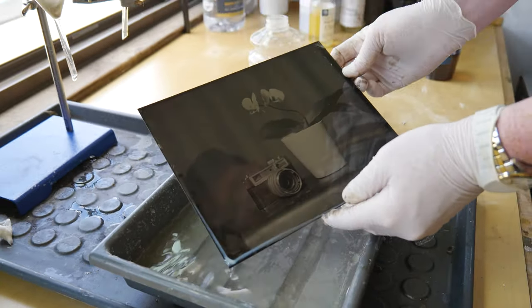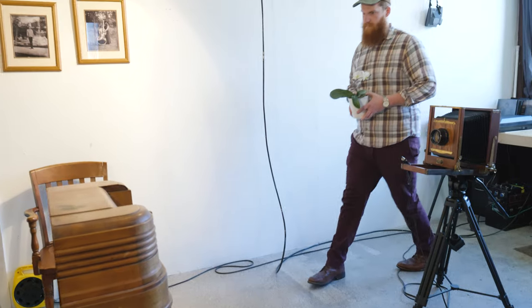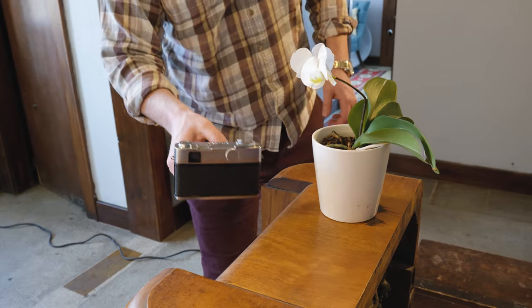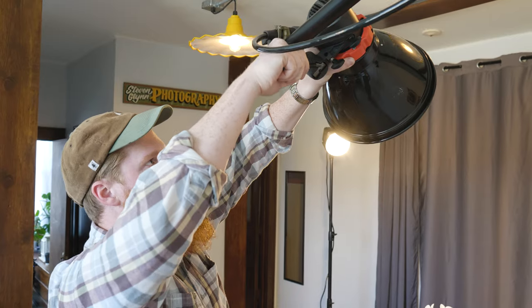So the first thing we do is compose the image. This is important because we don't have a ton of time after we've poured our plate because the process is done while the plate is wet. So if it dries it won't turn out.